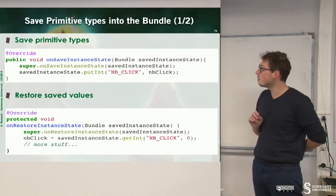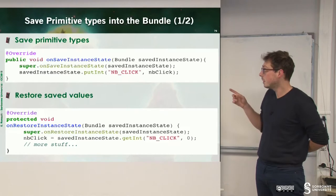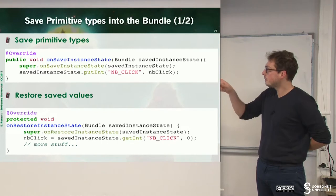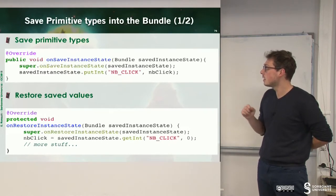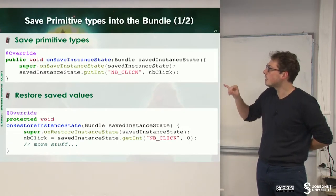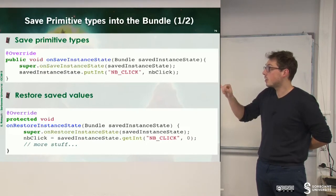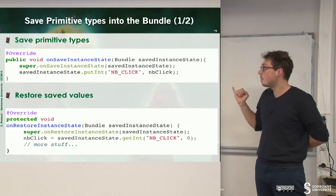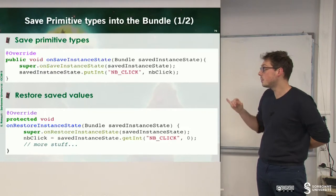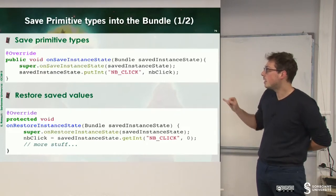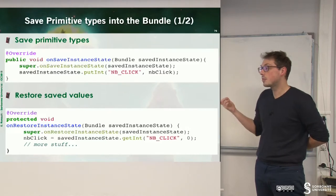Here is a small example of how to save some values. The method onSaveInstanceState will put an int inside of the bundle called savedInstanceState. We fix a key, "number of clicks", and then fix a local value, which is nbClick. To restore the saved values, we override onRestoreInstanceState with the bundle, and then we can get the number of clicks we saved earlier.